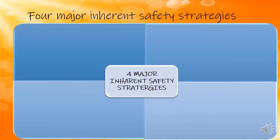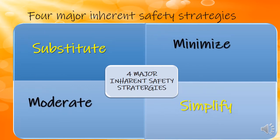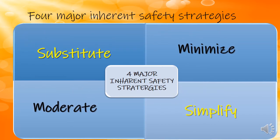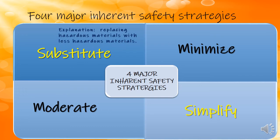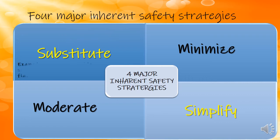In inherent safety, there are four major strategies being used. They are substitute, minimize, moderate, and simplify. For substitute, it is replacing the hazardous material with a less hazardous material. For example, a non-flammable solvent could replace a flammable solvent in a process.